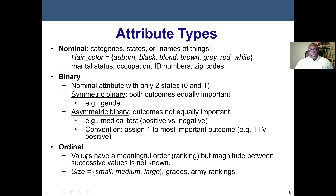Next we have ordinal data — data that is put in ranking or in order. A simple example is student grades: A, B, C, D, or F. Or military rankings: the lowest rank is private, then private first class, then corporal, then sergeant — it's in order. Or shirt sizes: small, medium, large, extra large, extra extra large. Ordinal data means data that is normally put in order.